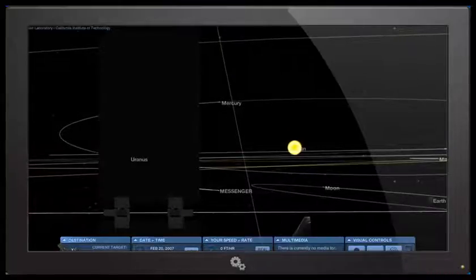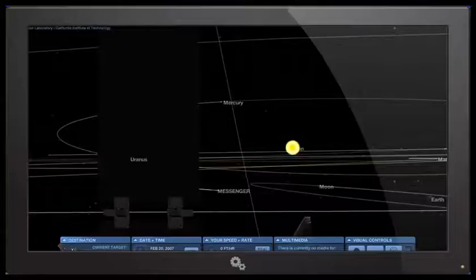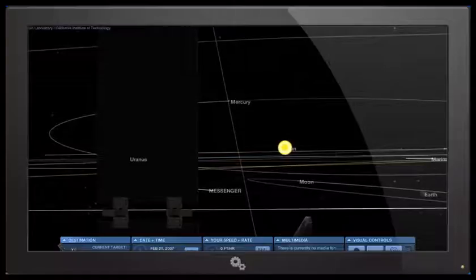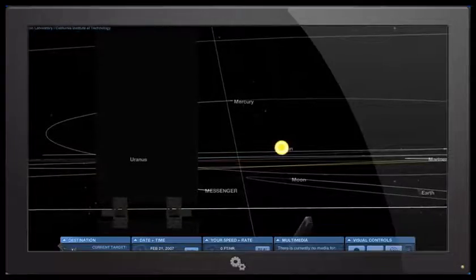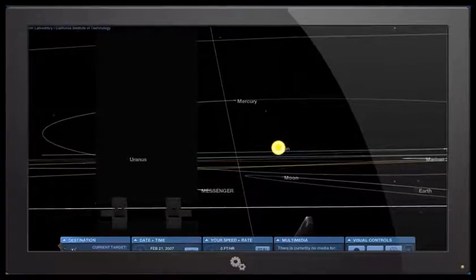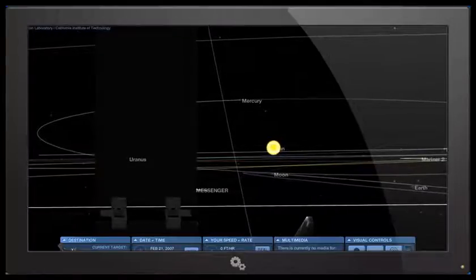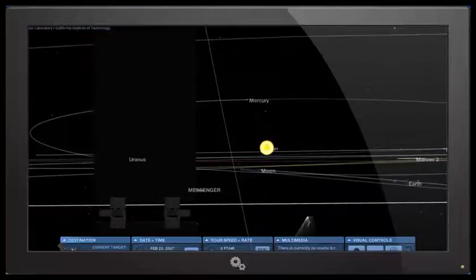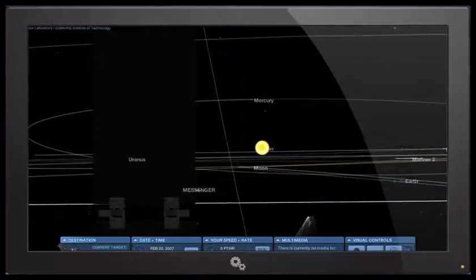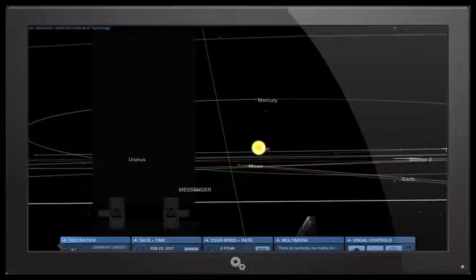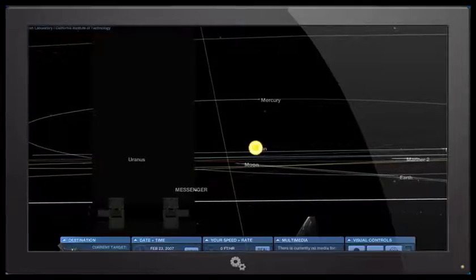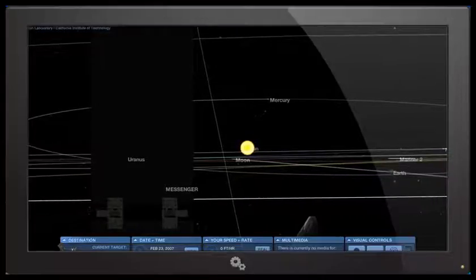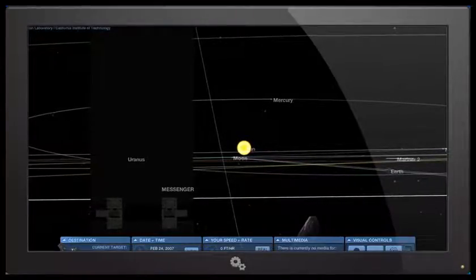So let's have a look at the view from the STEREO Behind spacecraft as we run time forward to the 25th and 26th of February 2007. So you can see that the moon is progressing along its orbit as it orbits around the Earth. It's coming up from the lower right hand side as we see it. It's now approaching a 6 o'clock position to the sun. It is coming up higher and higher. We are now up to February 22nd, 2007.